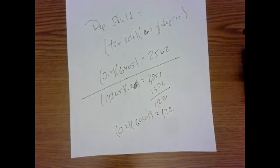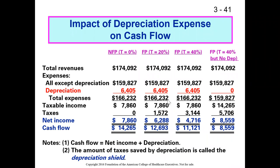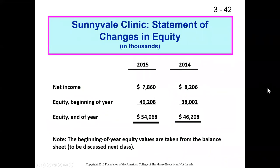You can calculate the depreciation shield if you know how much depreciation you have and your tax rate. There'll be a couple of problems on that in the text. So, calculating Sunnyvale's change in equity: Sunnyvale had net income — excess of revenue over expenses — of $7,860,000 in 2015. Because Sunnyvale is a not-for-profit, it cannot pay dividends and must retain all earnings.